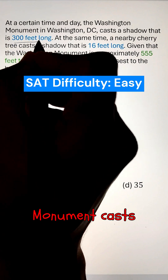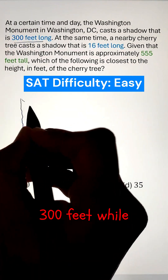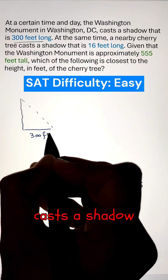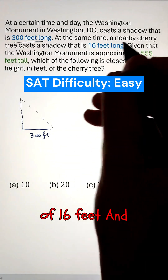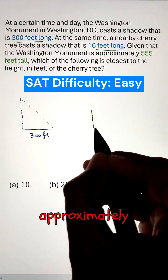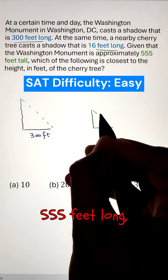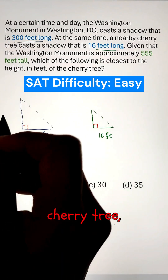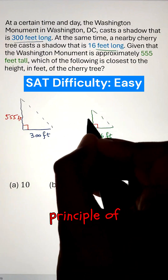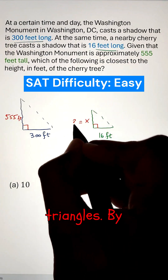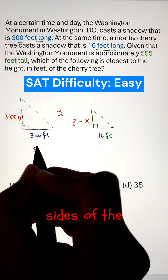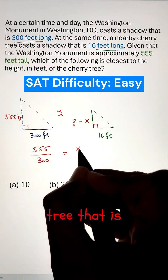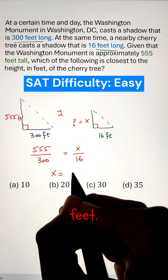If the Washington Monument casts a shadow of 300 feet while a nearby cherry tree casts a shadow of 16 feet, and if the Monument is approximately 555 feet tall, to figure out the height of the cherry tree, we can use the principle of similar triangles. By taking the ratio of the sides of the triangles, we can get the height of the tree, which comes out to 30 feet.